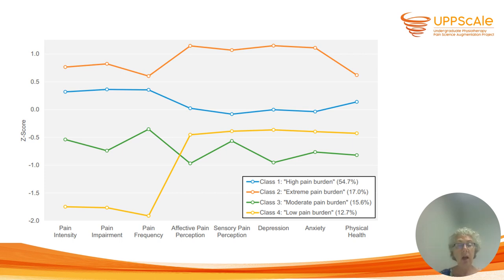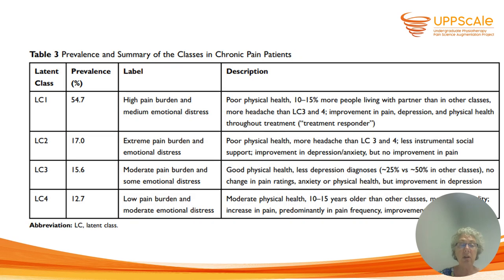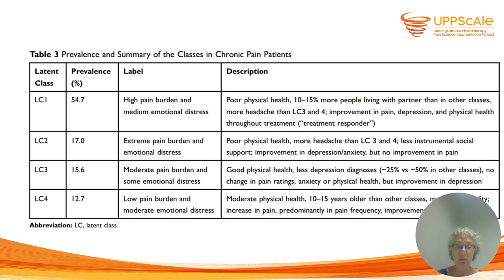They then looked at outcomes of these various groups and found that outcomes differ by group as well. The high pain burden and median emotional distress group responded quite well, with decreases in pain intensity and depression. The extreme pain burden and emotional distress group — the highest in the table — had no improvement in pain and almost no improvement in depression. So phenotyping helps you predict outcomes, and of course we need more research, but it's a promising way forward for the future.